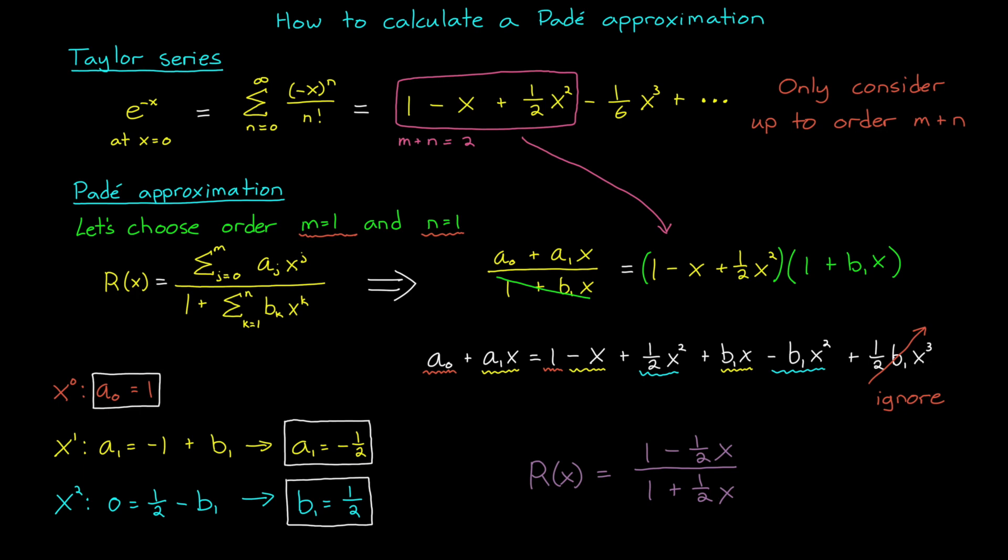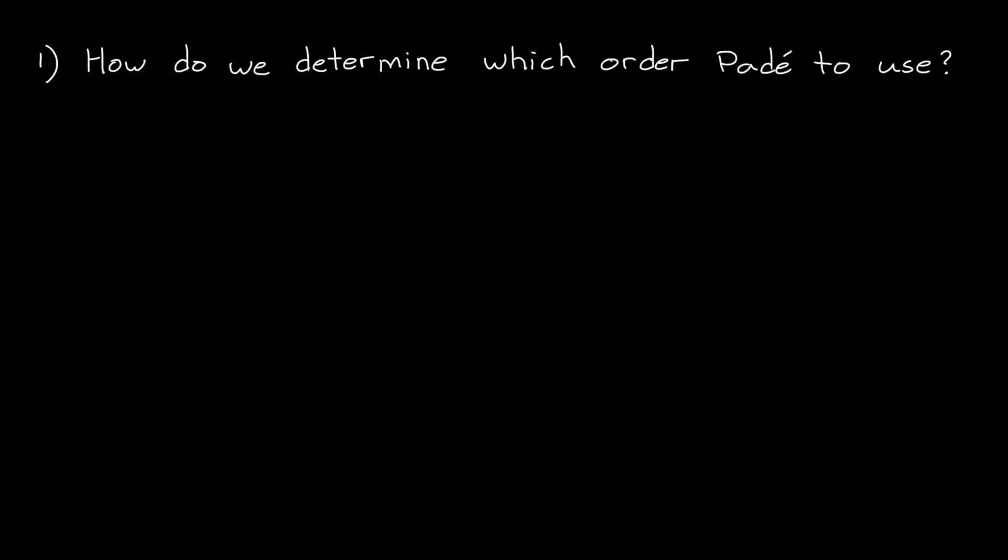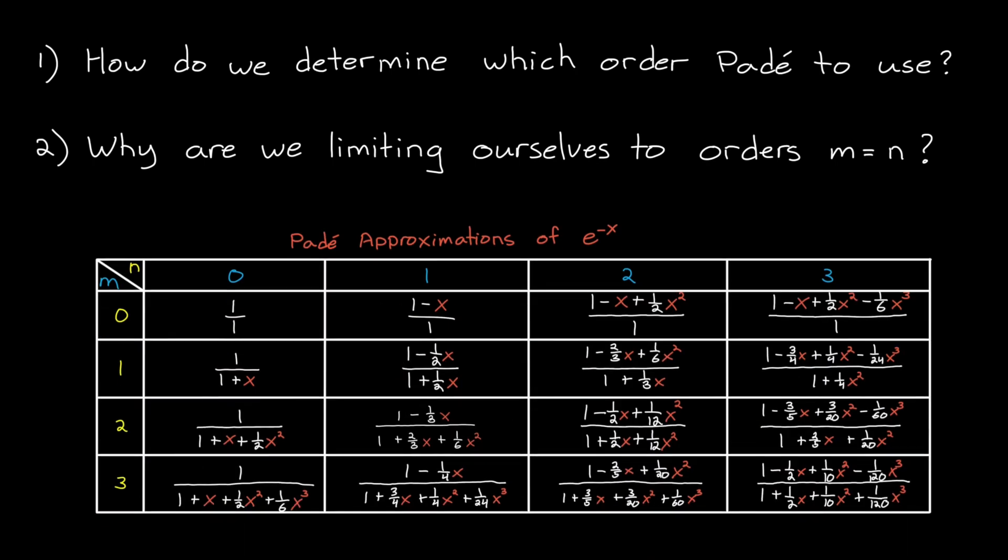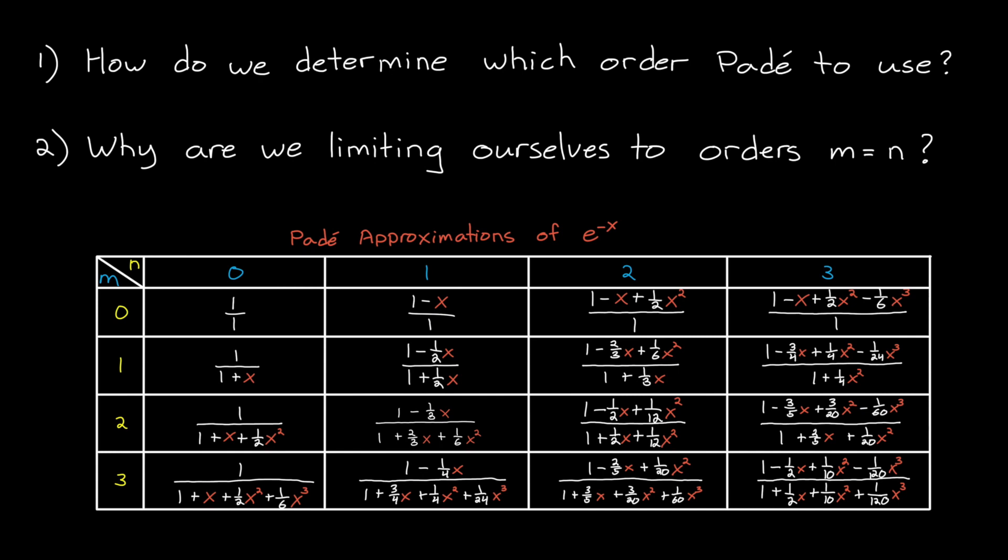So we did this calculation with order m equals 1 and n equals 1, but we could do this method for higher orders as well. And so with that being said, two questions come to mind. One, how do we determine which order Padé to use? And two, why are we limiting ourselves to equal order polynomials for both the numerator and the denominator? When we showed this table earlier, we can see that there's all sorts of mixed order polynomials. So why are we so concerned with one over one or two over two or three over three?